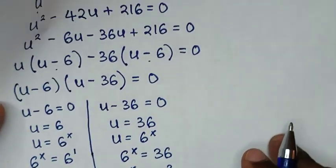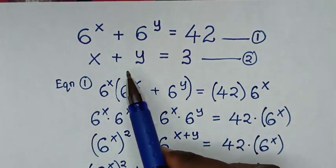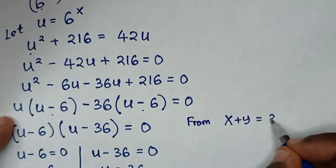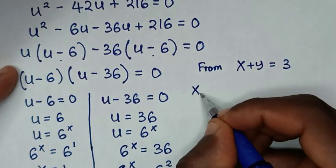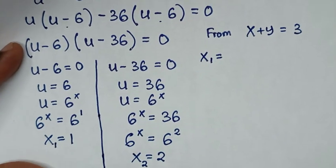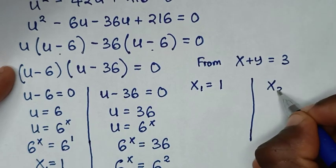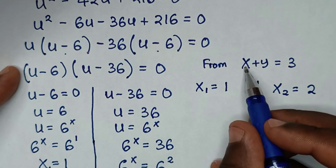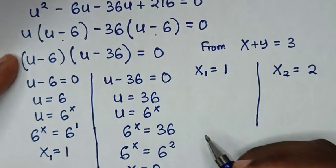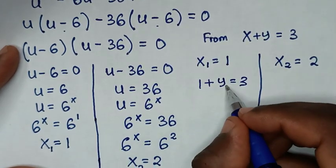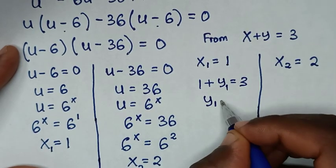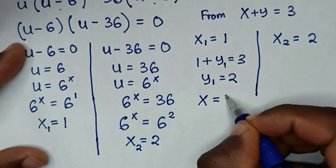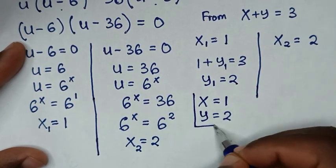To find the values of y, we use the second equation x plus y is equal to 3. In case 1, where x is equal to 1, substituting gives 1 plus y is equal to 3, so y1 is equal to 3 minus 1, which is 2. So the first solution is x equals 1 and y equals 2.